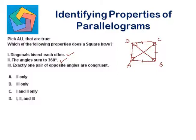Exactly one pair of opposite angles are congruent — this is false, because all angles are 90 degrees, so both pairs of opposite angles will be congruent. So statements 1 and 2 are true, which is the answer for this part.